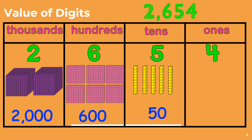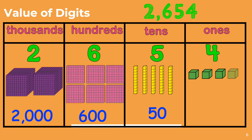The next number we are going to look at is the number 4 in the ones place. We will represent the number 4 using base 10 blocks. To determine the value of the 4, we will count each of the blocks by ones: 1, 2, 3, 4. So the value of the 4 is 4.